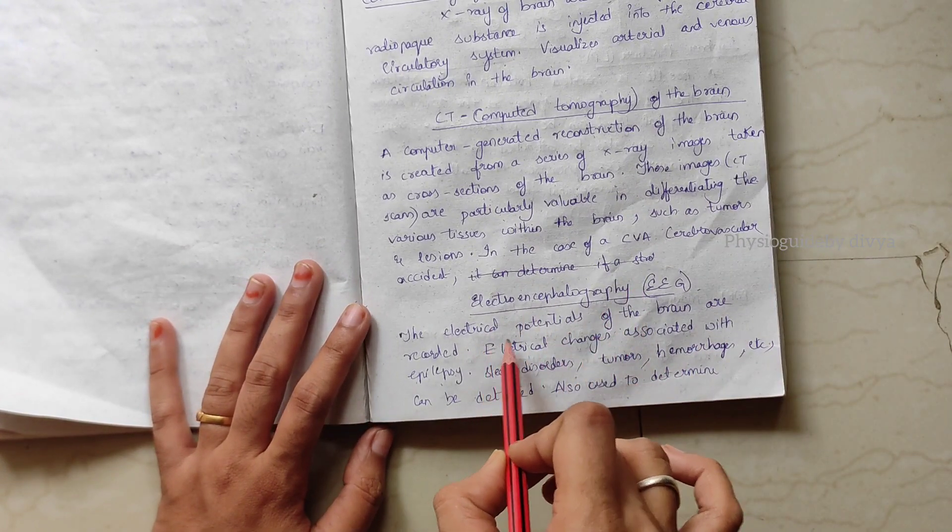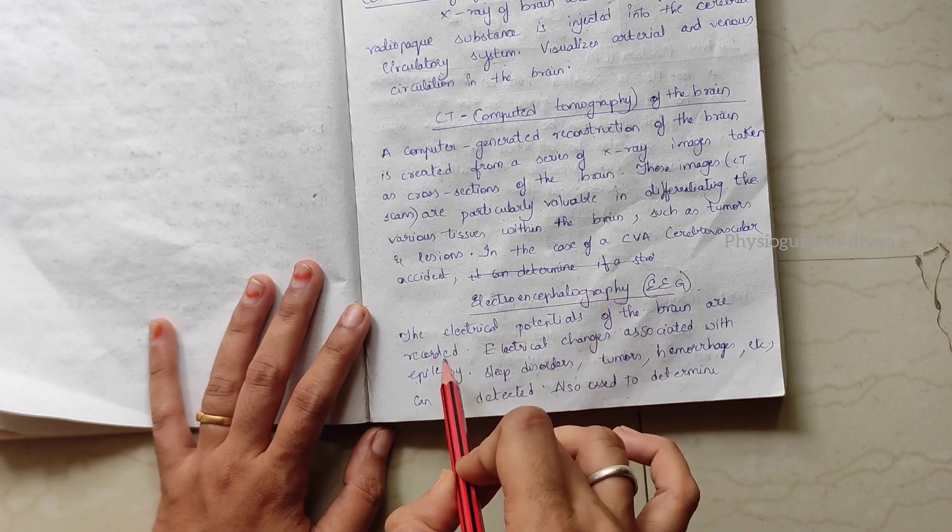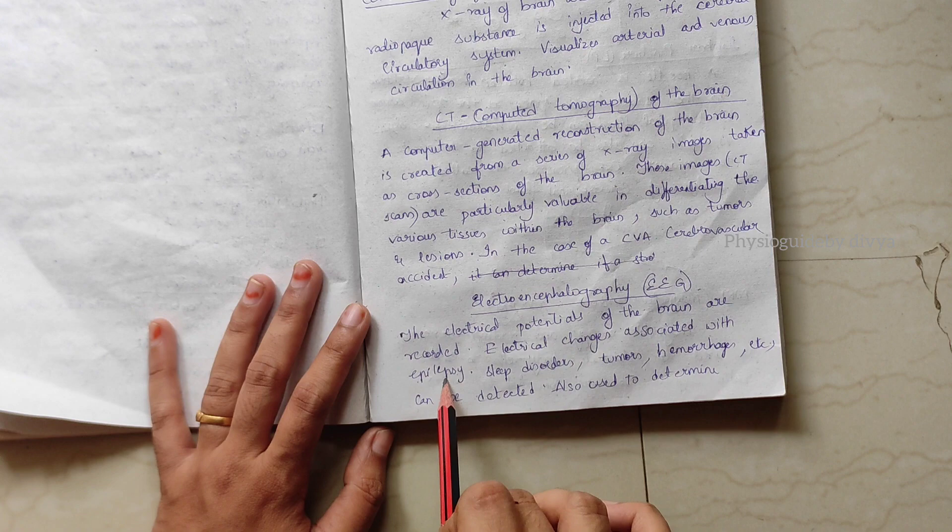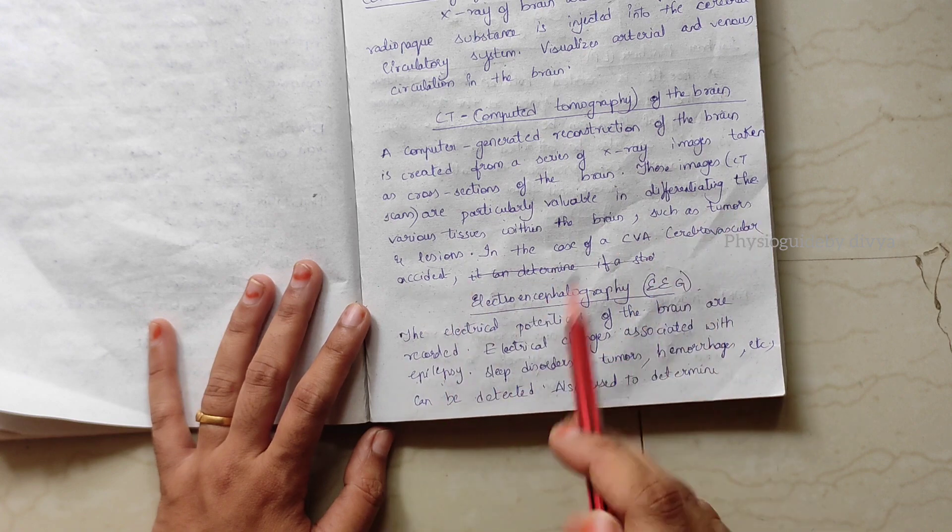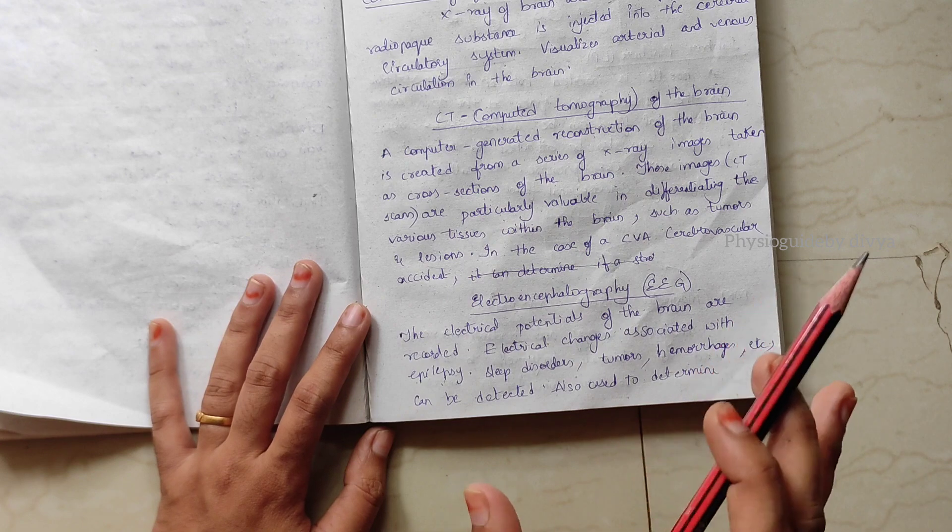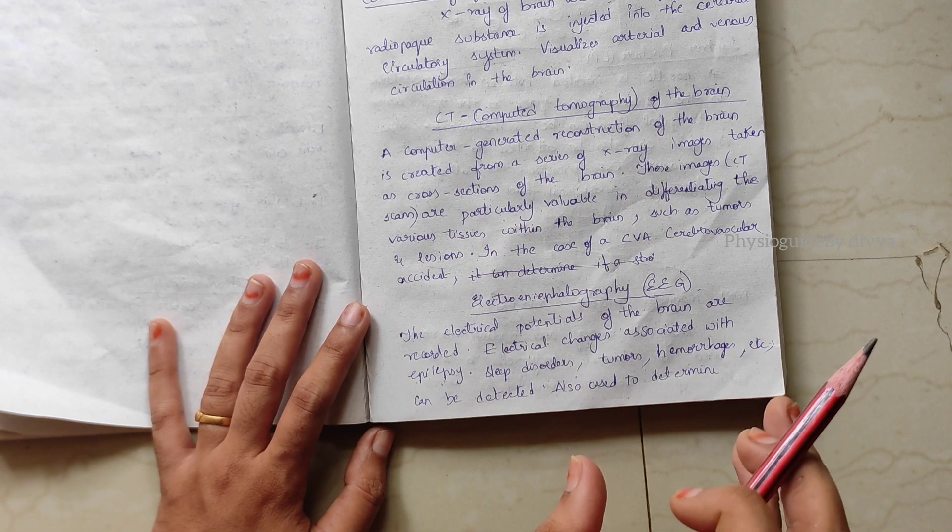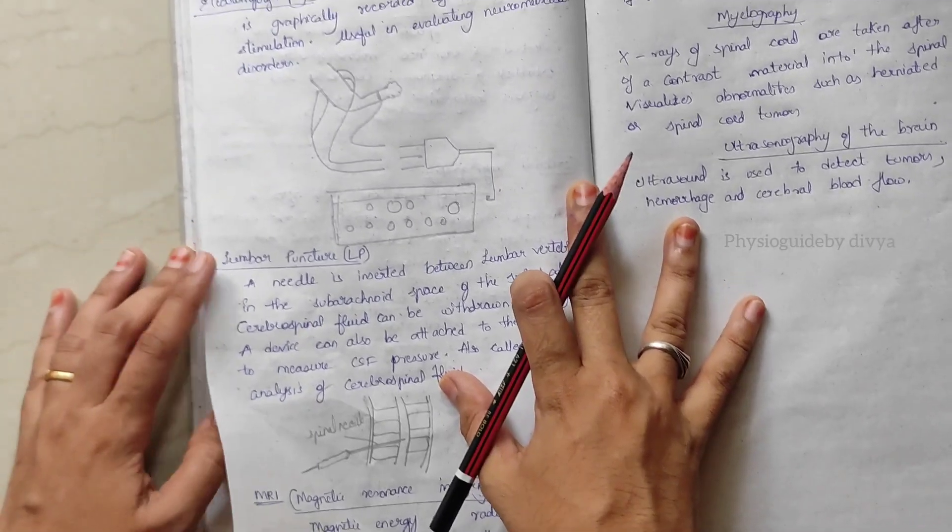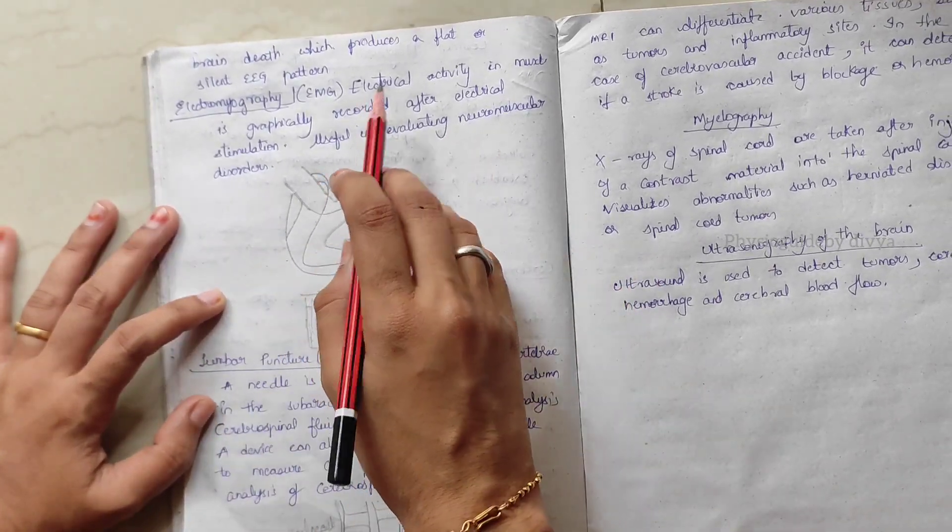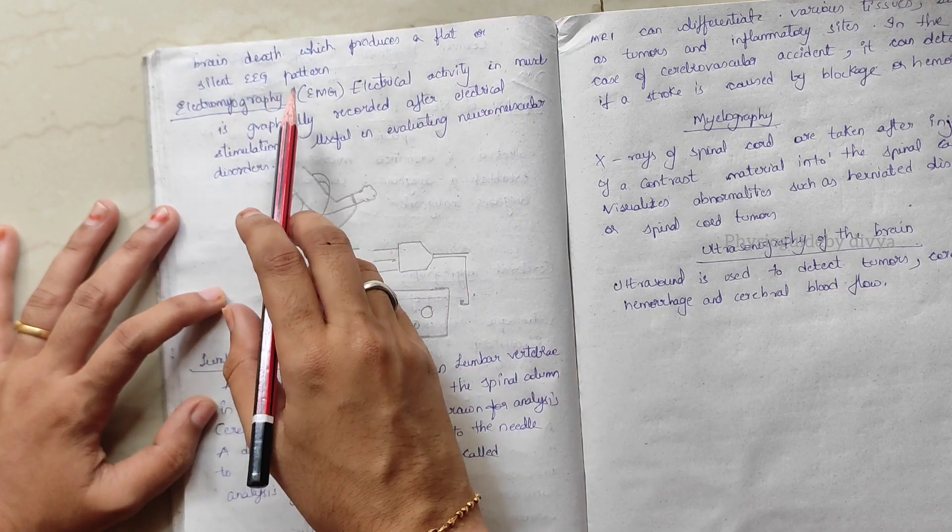The electrical potentials of the brain are recorded, and electrical changes associated with epilepsy, sleep disorders, tumors, hemorrhages, etc. can be detected. This can also be used to determine brain death, whether the brain is functioning properly or not, with problems of flat or silent EEG pattern.